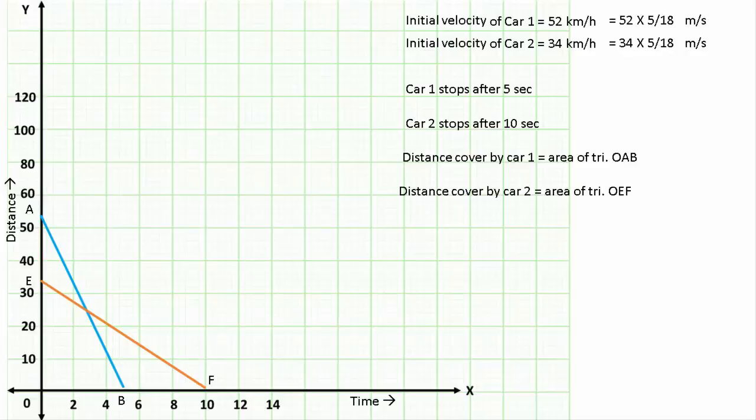Now I hope you know the formula to find area of triangle OAB. That is, area of triangle OAB is equal to one half times breadth times height. So substituting the respective values: base is on x-axis, that is 5 seconds, and height is speed on y-axis, that is 52 times 5 over 18. And calculating further, our answer will be 36.1 meters.